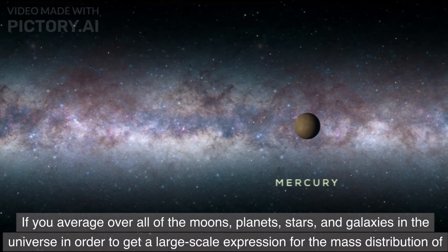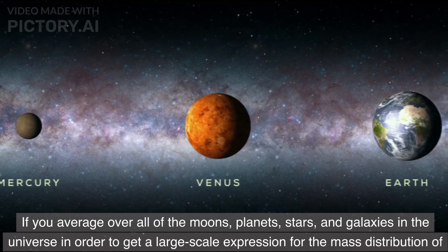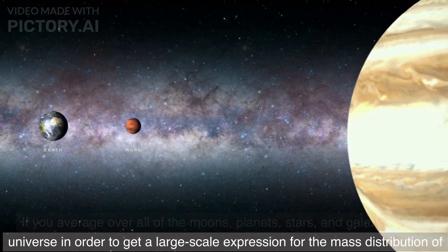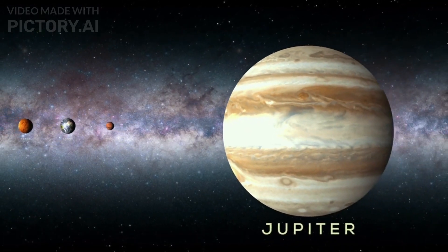If you average over all of the moons, planets, stars, and galaxies in the universe in order to get a large scale expression for the mass distribution of the universe, you find it to be constant.